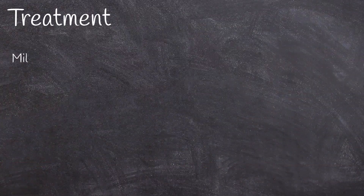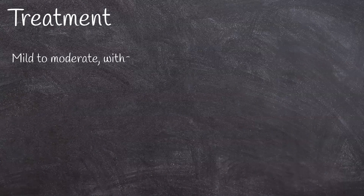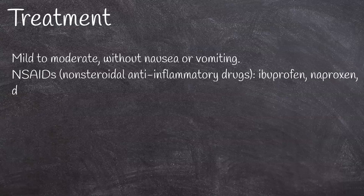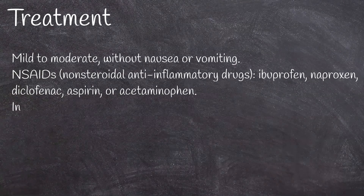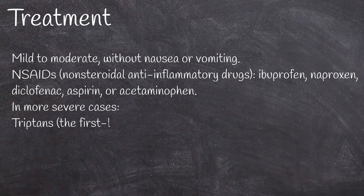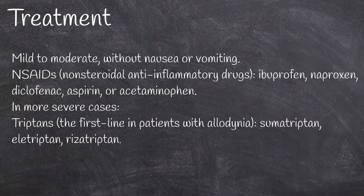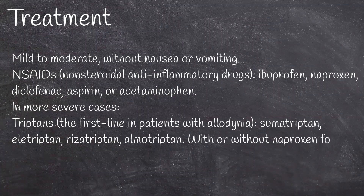For treatment, when migraine is mild to moderate without nausea or vomiting, NSAIDs (nonsteroidal anti-inflammatory drugs) such as ibuprofen, naproxen, diclofenac, aspirin, or acetaminophen are used. In more severe cases, triptans are the first line, particularly in patients with allodynia. These include sumatriptan, eletriptan, rizatriptan, and almotriptan, with or without naproxen for moderate to severe attacks.